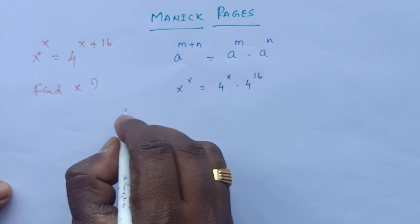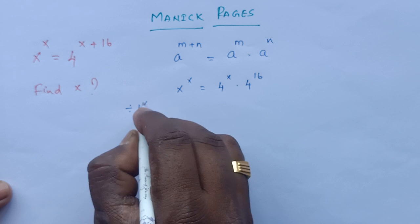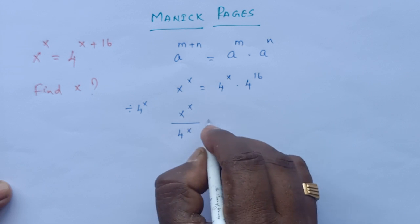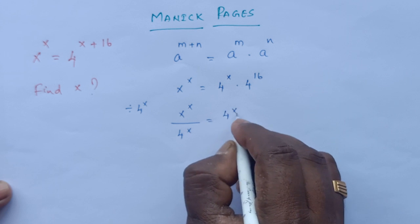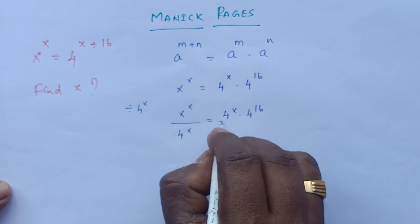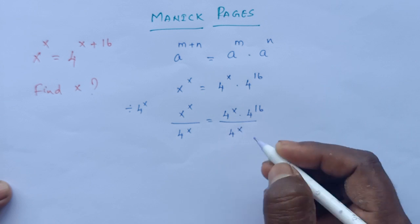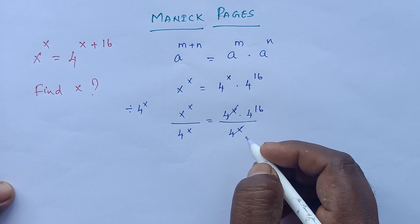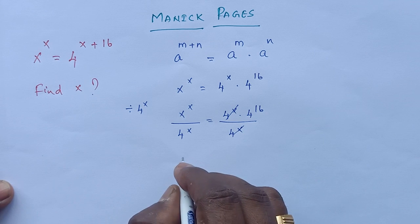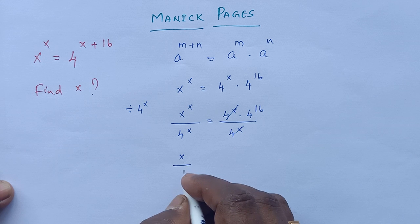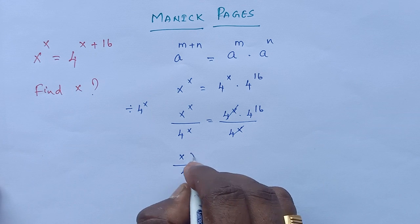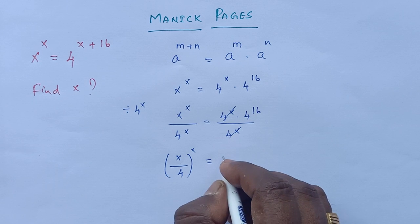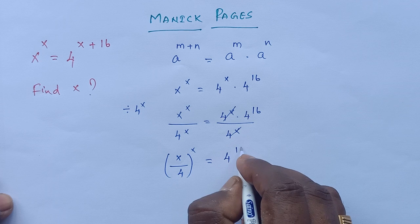Now we divide both sides by 4 raised to the power x. That gives us x^x divided by 4^x, which is equal to 4^x multiplied by 4^16, divided by 4^x. The 4^x terms cancel, so we get (x divided by 4) whole raised to the power x, equal to 4 raised to the power 16.